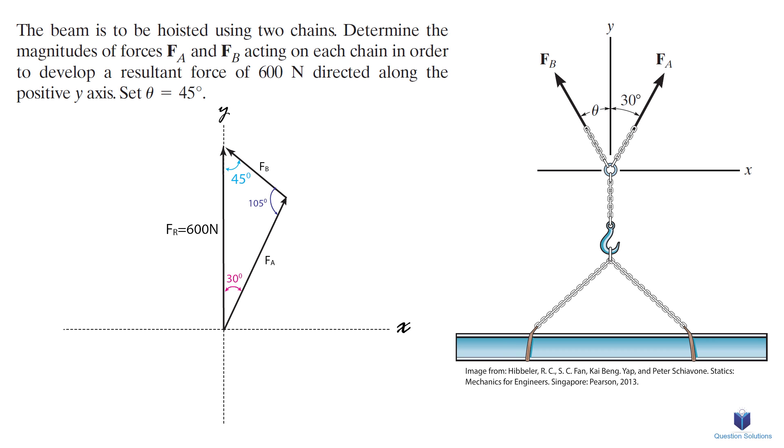To figure out Fa we can write Fa over sine 45 degrees is equal to 600 newtons over sine 105 degrees. This gives us a value of 439 newtons for Fa.